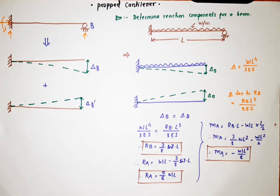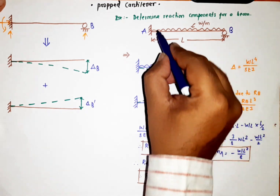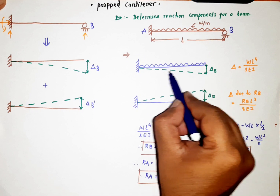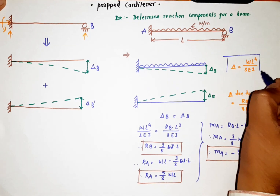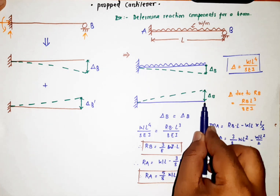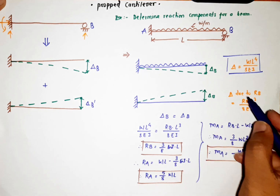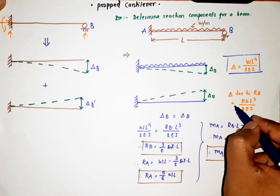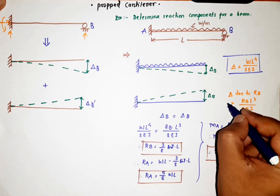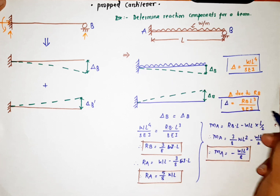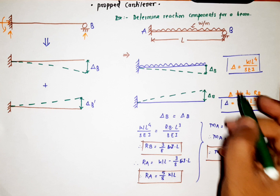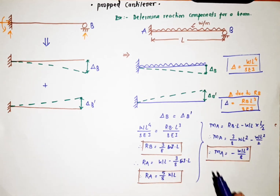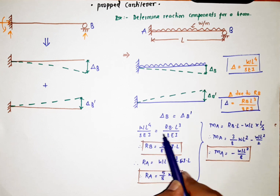Consider a propped cantilever AB with a UDL of w per meter and length l. For a cantilever with UDL, the deflection is delta = wl³ / 8EI. When a point load RB is applied at the end, the deflection is delta = RB × l³ / 3EI. Applying the compatibility condition delta_B = delta_B', we get wl³ / 8EI = RB × l³ / 3EI, which gives RB = 3wl/8.